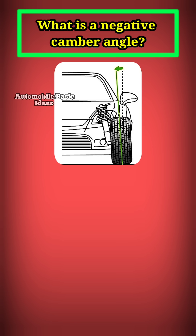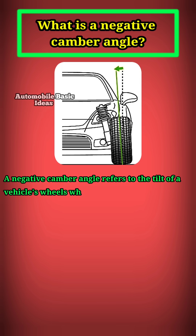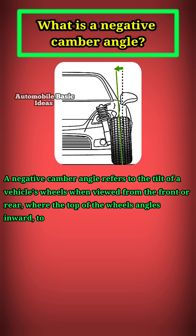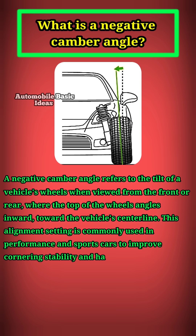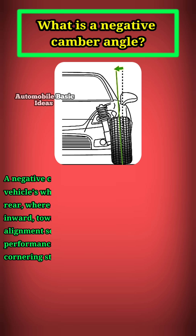What is a negative camber angle? A negative camber angle refers to the tilt of a vehicle's wheels when viewed from the front or rear, where the top of the wheel angles inward toward the vehicle's center line. This alignment setting is commonly used in performance and sports cars to improve cornering stability and handling.